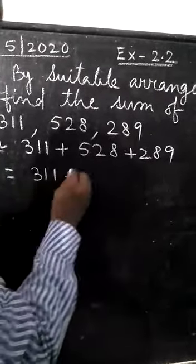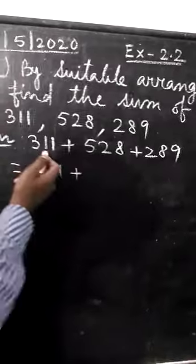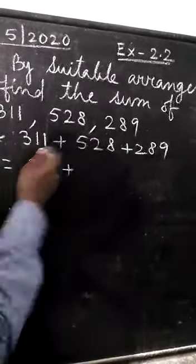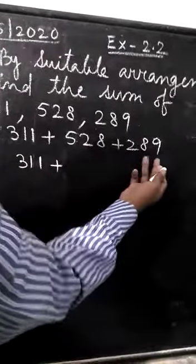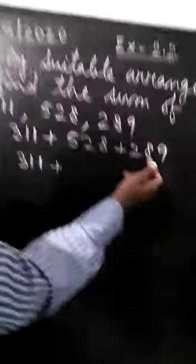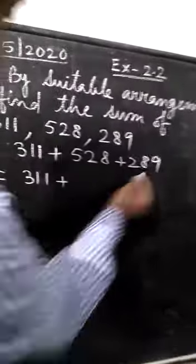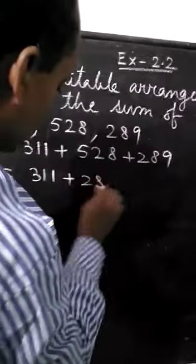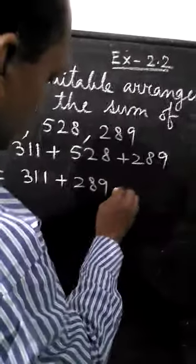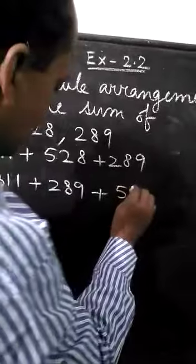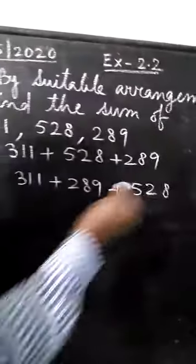3, 1, 1 plus, we find here 3, 1, 1 means 11 at the last. Then, let me bring this one after this. That is 89. 89 plus 11, we will get a whole number of hundreds. That is 289 at this position and then let us write 5, 2, 8.